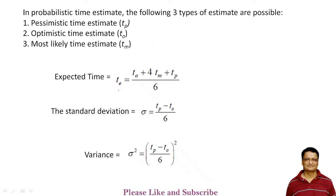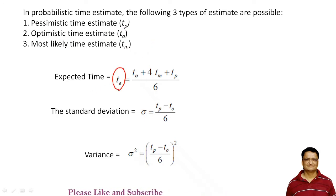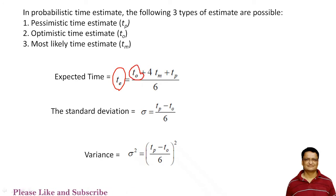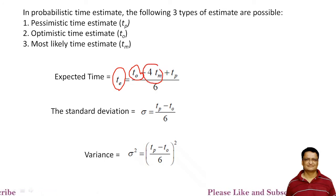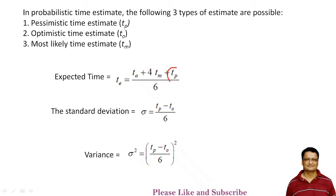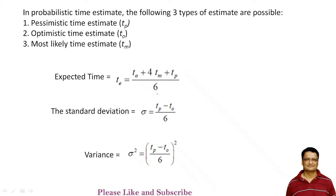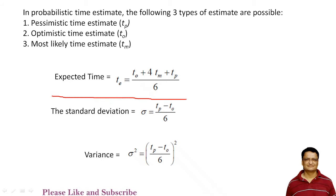We calculate the expected time with this formula: T_e = (T_o + 4×T_m + T_p) / 6, where T_o is optimistic time, T_m is most likely time, and T_p is pessimistic time. With this formula, we can calculate the expected time for a given activity.